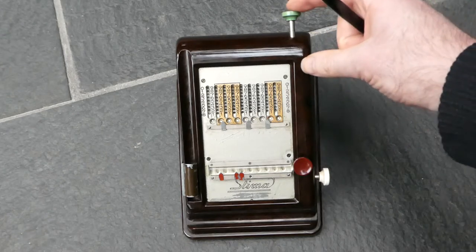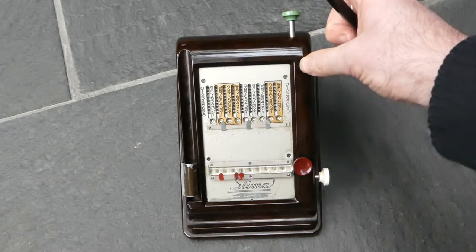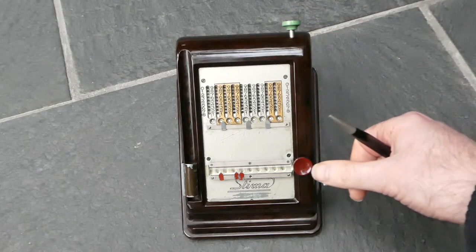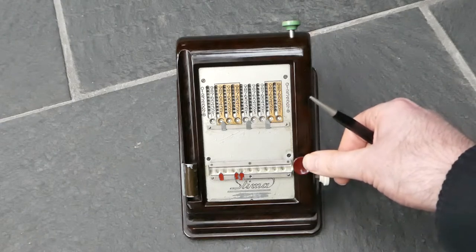The green button here at the top, that's for multiplication. If I push that down it's as if this red release button was permanently engaged.